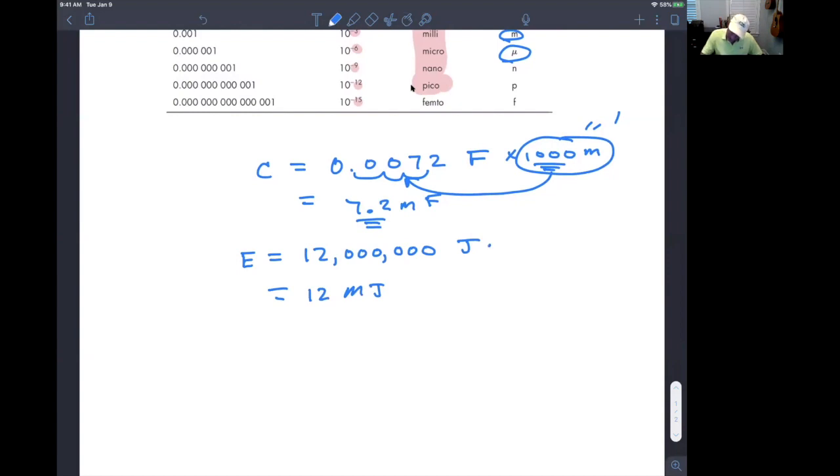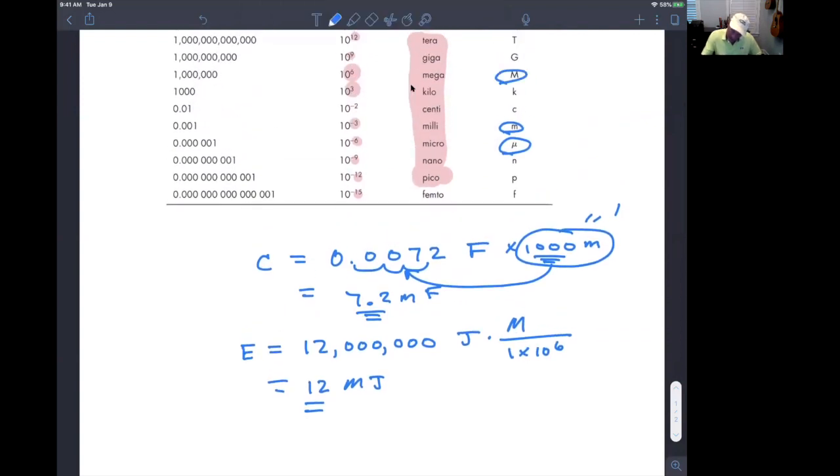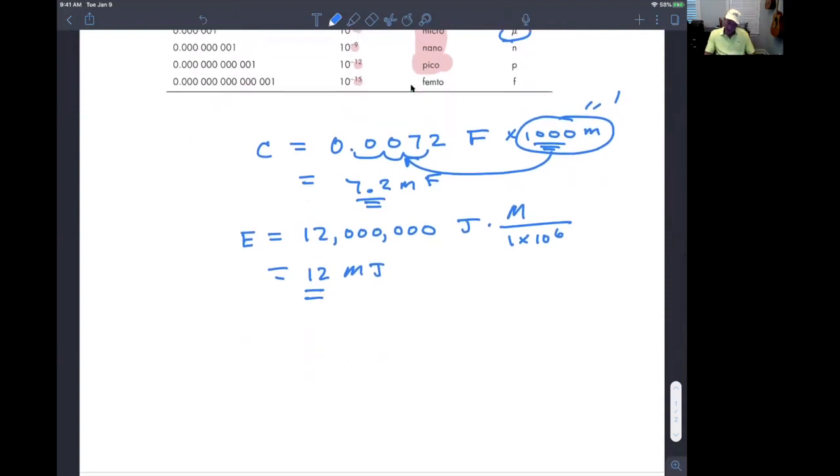Going through that, if I divide by one times 10 to the sixth, that's a million, that would give me the 12. 12 million divided by a million is 12. And then I need to multiply by the prefix cap M. Look up cap M. That's mega, times 10 to the sixth. And we get some energy of 12 mega joules.